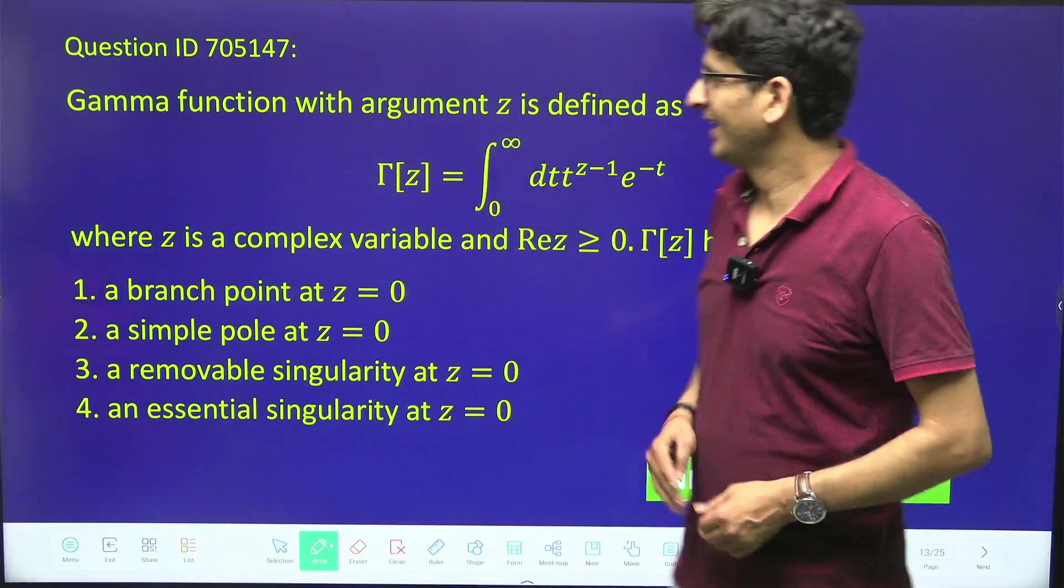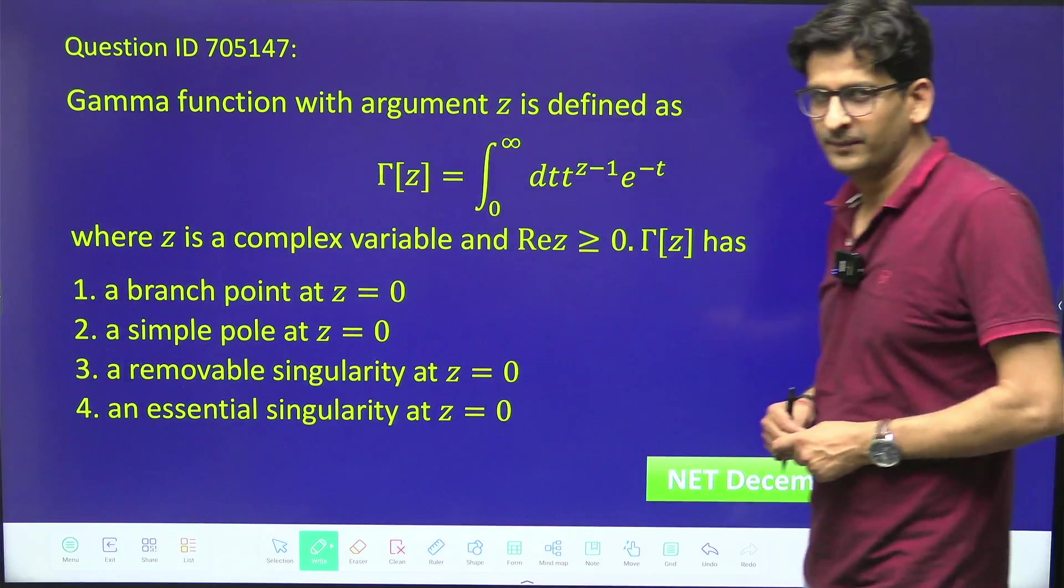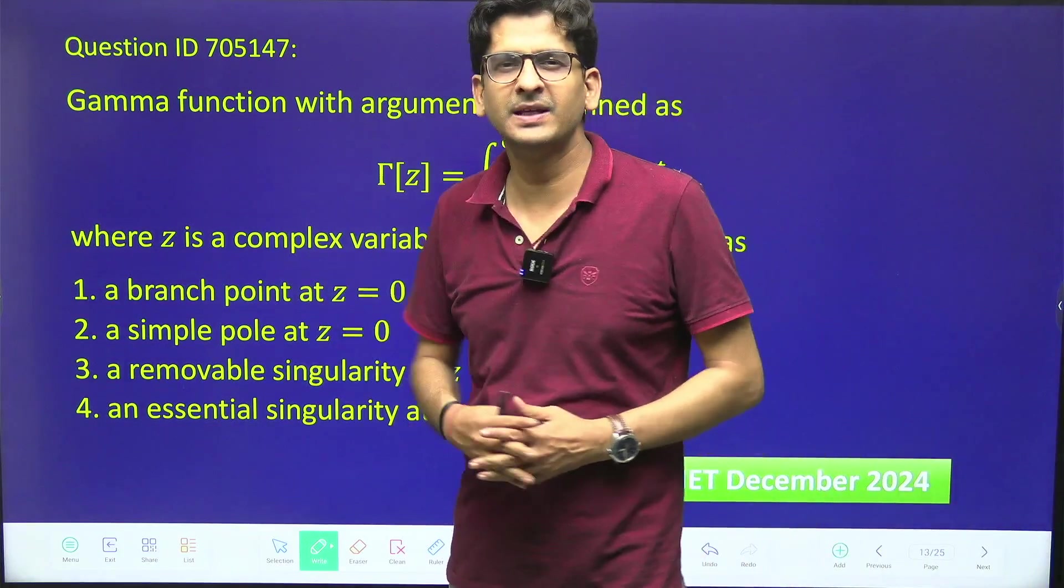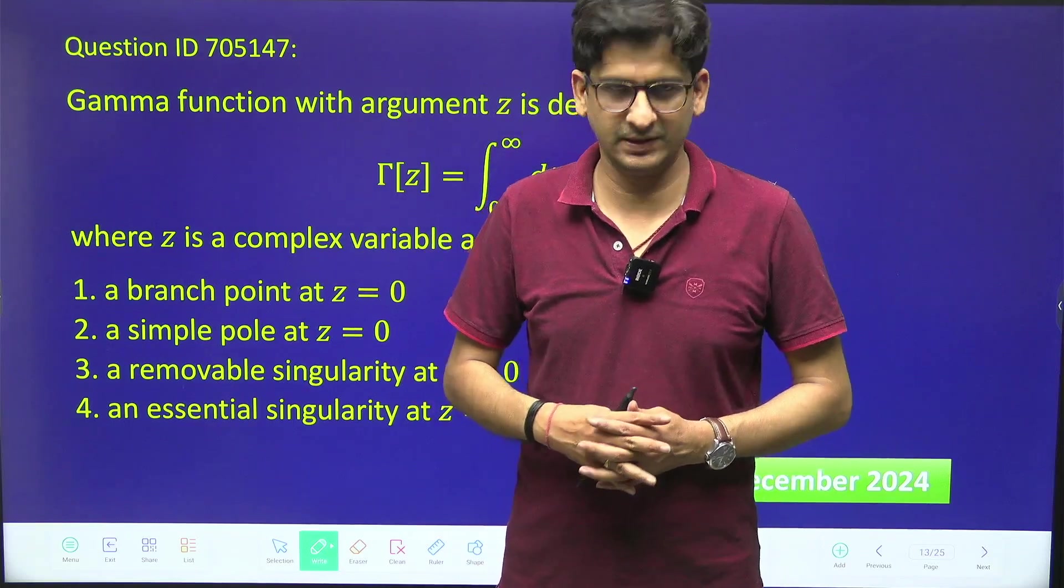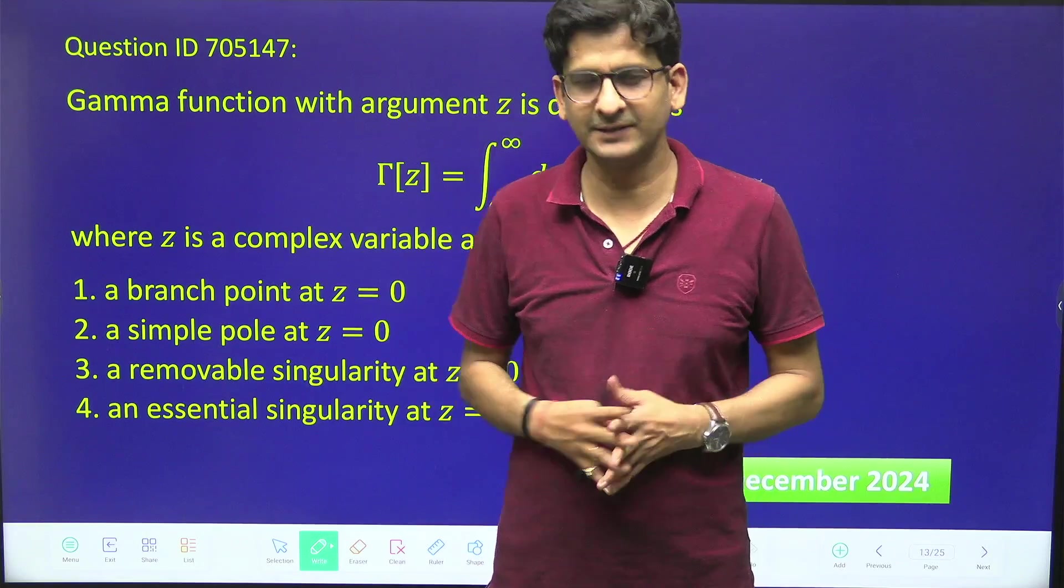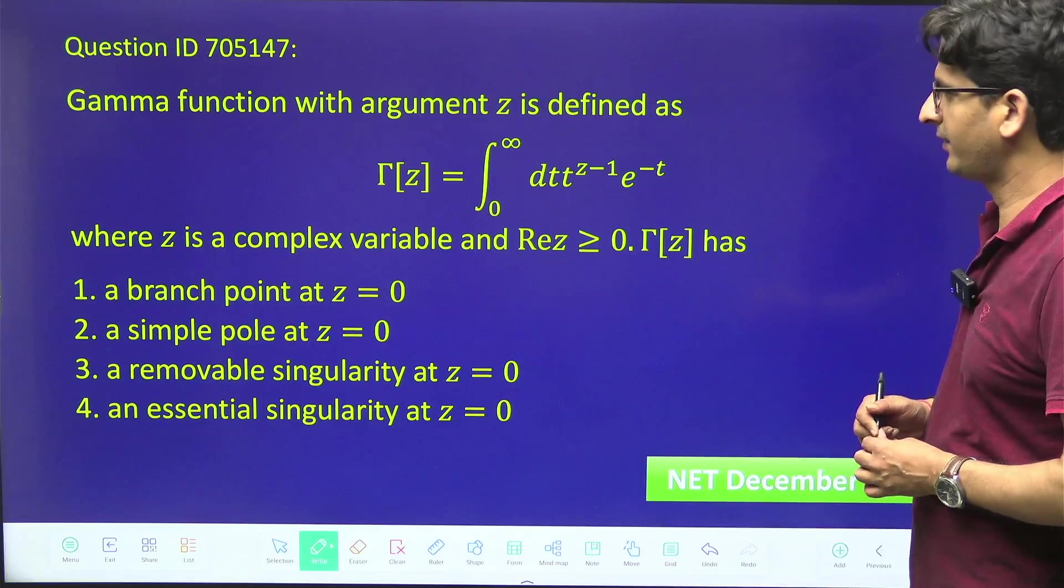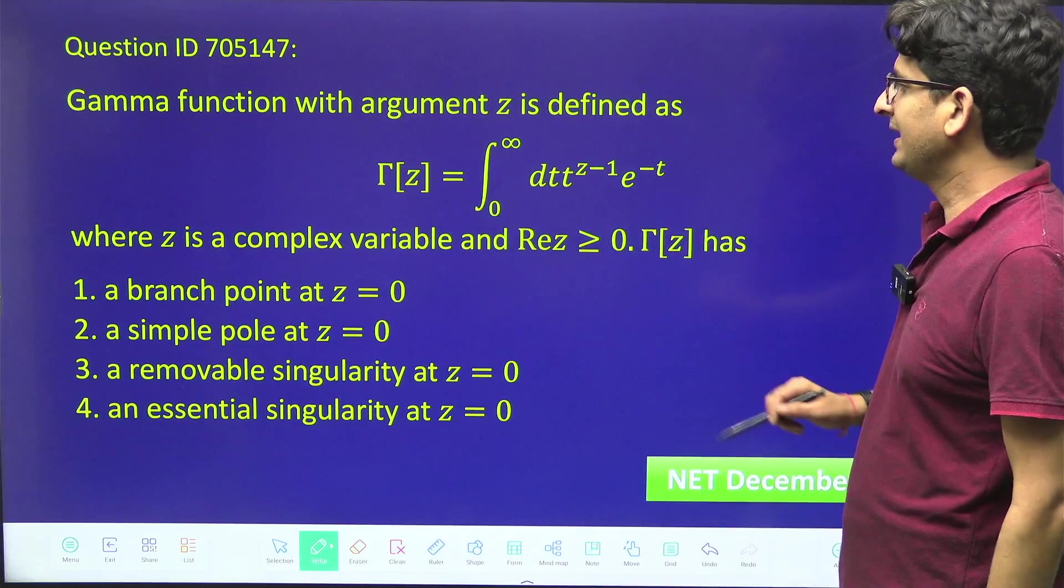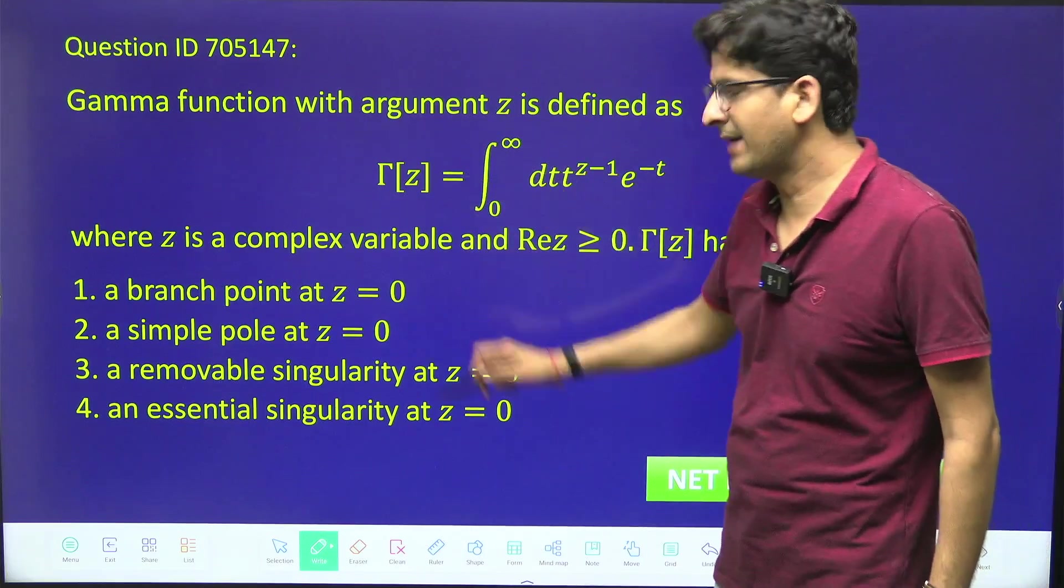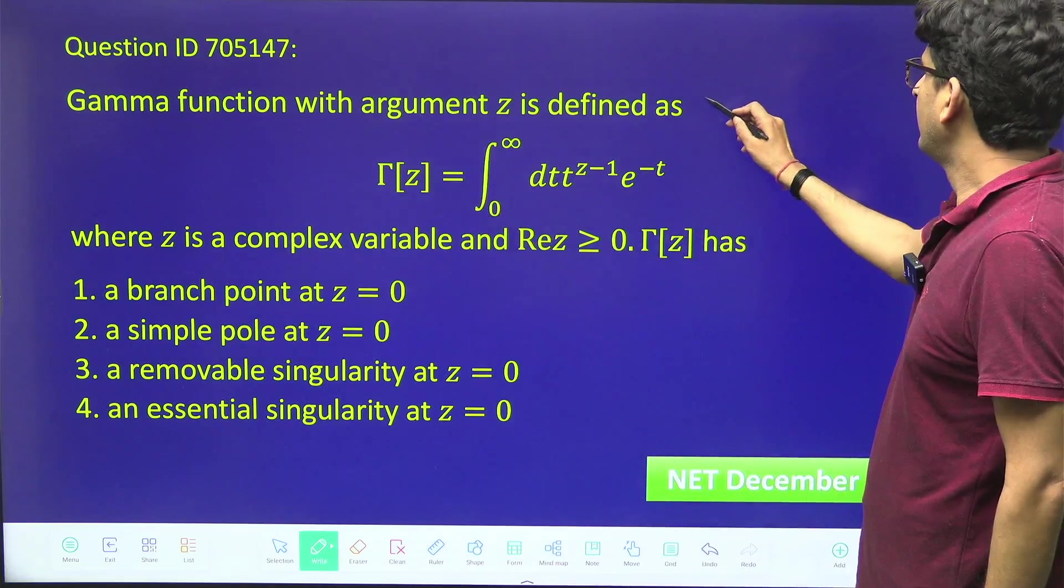Hello students, this is a question from NET December 2024. The question is based upon the different types of singularity which we studied during Laurent expansion, but the format of the question was a little bit different. In this, a gamma function was given and they have asked about what is happening at gamma 0.